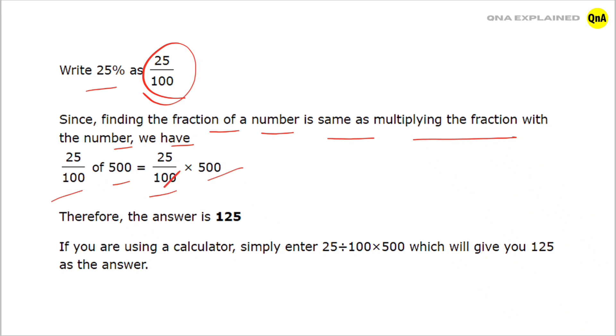First we solve it. We cross out zeros. After crossing out zeros we get 25 multiplied by 5. So 25 fives are 125, therefore the answer is 125.